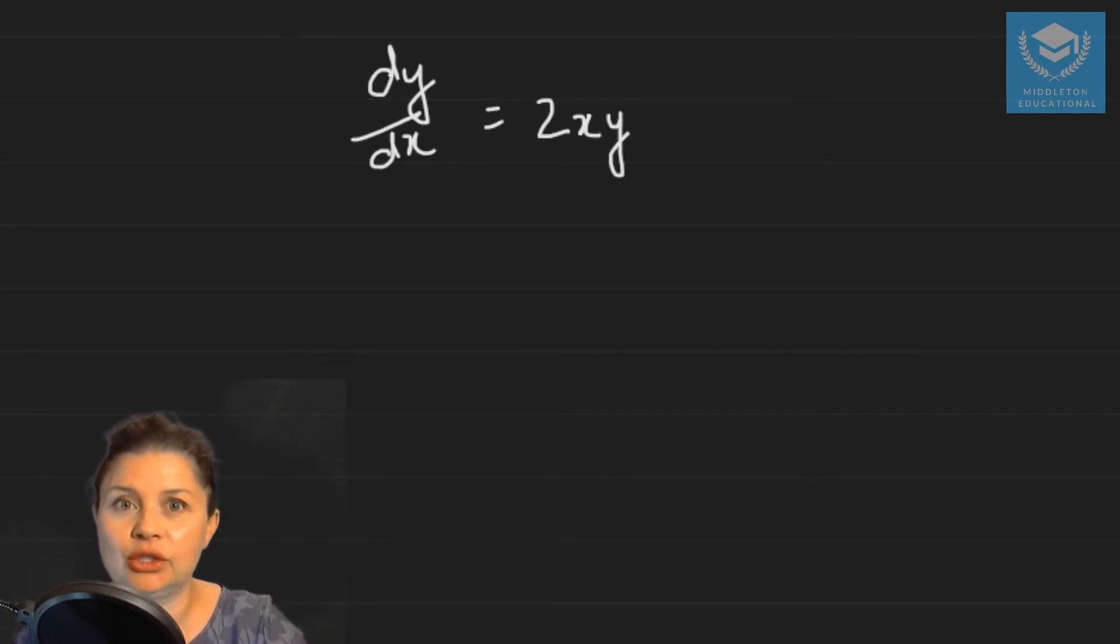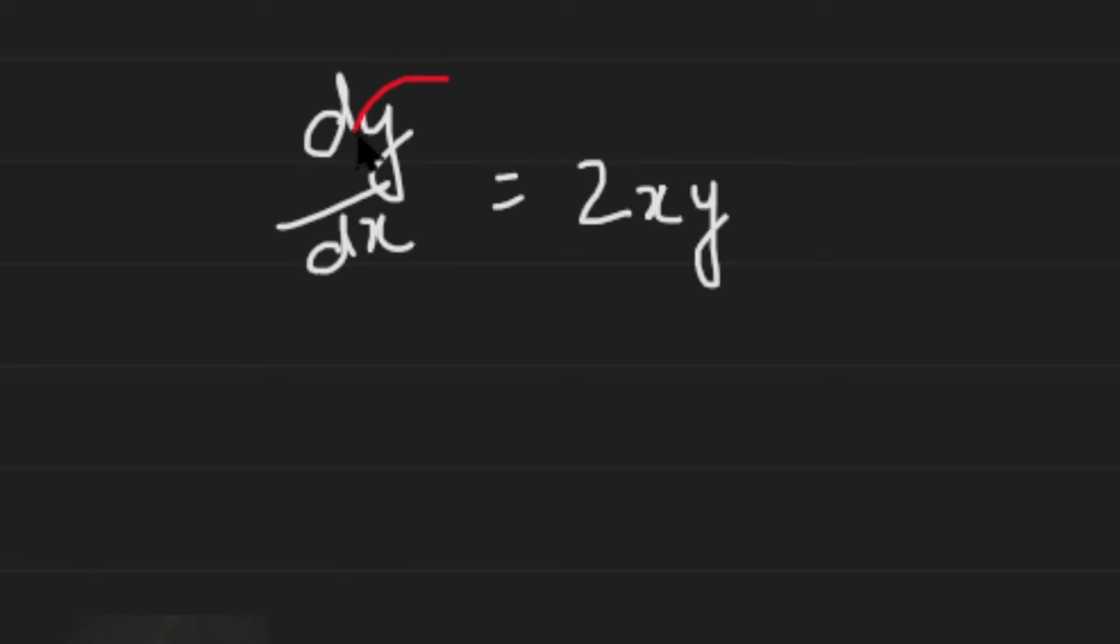So the first thing you always ask yourself is what is dependent and what is the independent variable. You'll see from the derivative it will tell us what that is. So our dependent variable is y and our independent variable is x.